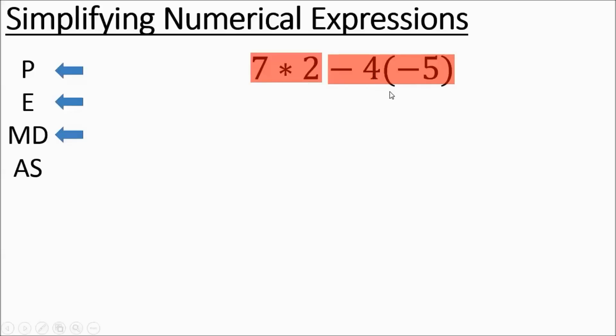You have this 7 times 2. And then you have this negative 4 times negative 5. A number right up against parentheses means you're multiplying. So the 7 times 2 is going to be 14. Negative 4 times negative 5 is going to be a positive 20. And then you do your adding, and you get 34.